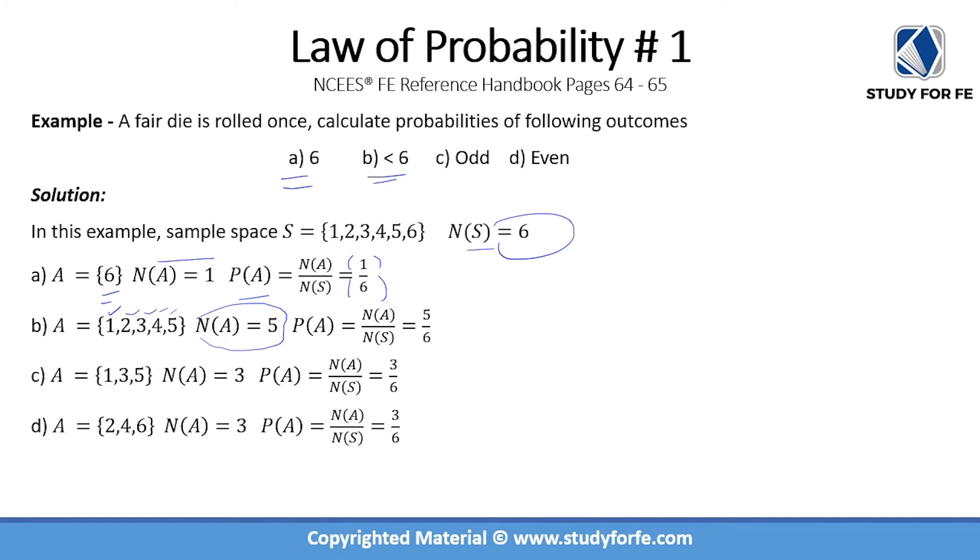Now for odd, we have one, three, and five, which is equal to three possibilities, so three divided by six. And for even, again we have two, four, and six, so three possibilities, so three divided by six. So you can see that by making use of law of probability and defining the sample space, defining the event space, this is the event space for this particular option.